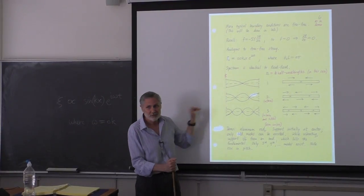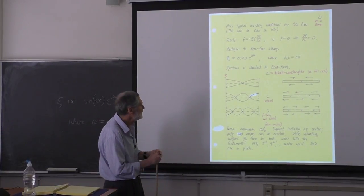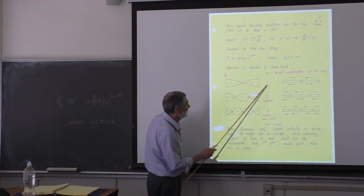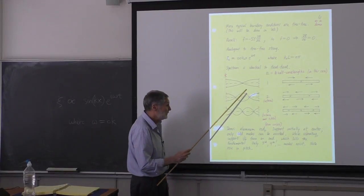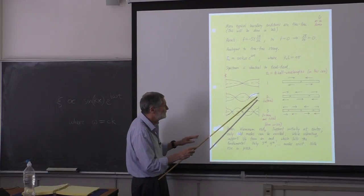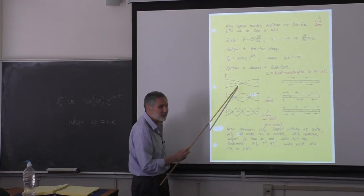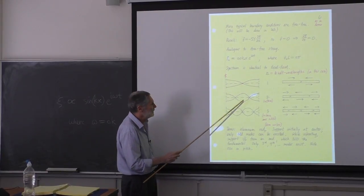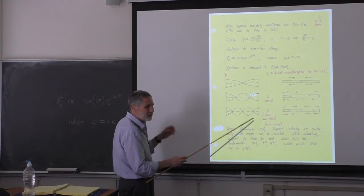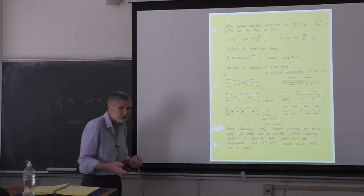You'll notice: there's half a wavelength in the free-free case too, so the frequency spectrum is identical. For a fixed-fixed bar, or a free-free bar, or a fixed-fixed string, or a free-free string — the waveforms are spatially shifted, but the frequencies are the same. For fixed-fixed and free-free, n is just the number of half wavelengths. n equals one means one half wavelength; n equals two means two half wavelengths. That's a nice interpretation of n, but it's not true for mixed boundary conditions.